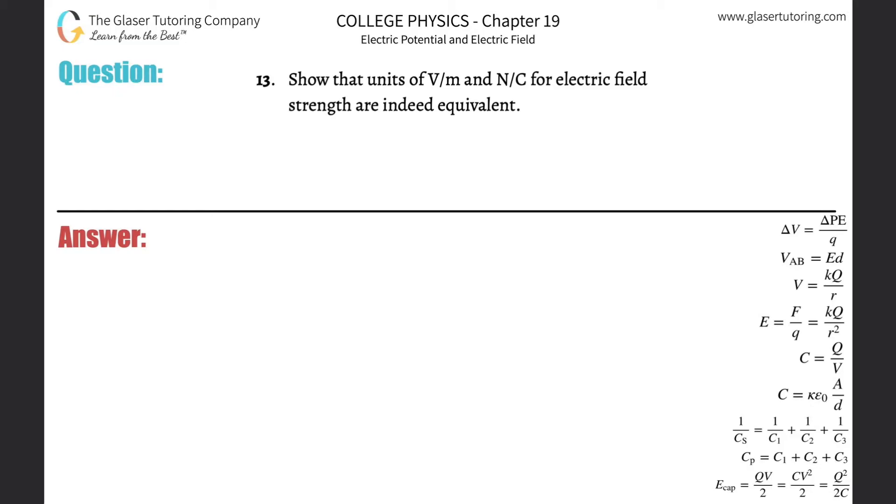Number 13, show that units of volts per meter and Newton per Coulomb for electric field strength are indeed equivalent. Alright, so we have to prove that volt per meter is going to be equal to Newton per Coulomb.